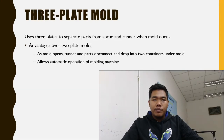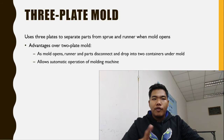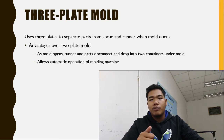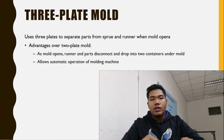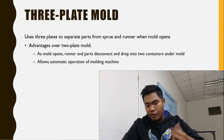The three-plate mold has two parting lines: one for the runner system and one for the molded product. When the injection mold opens, the runner is automatically separated from the product to allow separate handling, eliminating the need for manual separation. The sprue and runner system may be fed directly to a recycling system. This type of mold is more expensive than the two-plate mold.